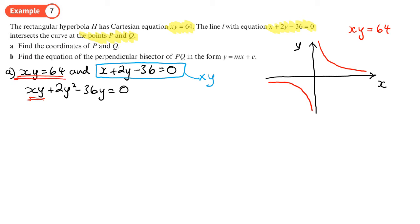That will give me 64 plus 2y squared minus 36y equals zero. Rearrange it so I'll get 2y squared minus 36y plus 64 equals zero. Let's divide everything by two so we get y squared minus 18y plus 32 equals zero. This factorizes.